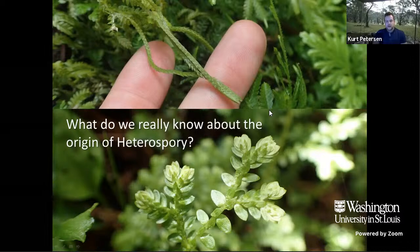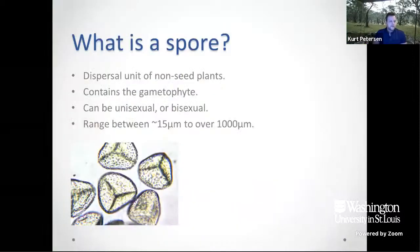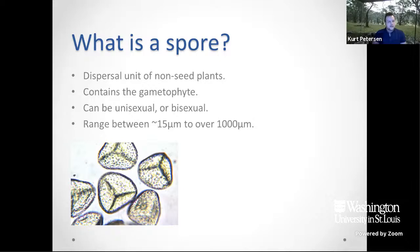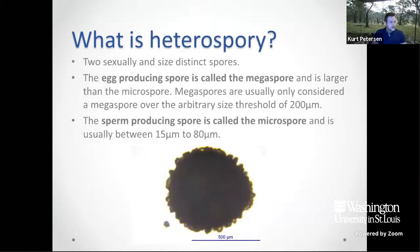I'll start by talking about what a spore actually is, to help anybody who's not too familiar with the non-seed plants. A spore is the dispersal unit of non-seed plants. It contains the gametophyte — the gametophyte is the haploid stage of the adult plant life cycle. In bryophytes that's the dominant adult stage, and in lycophytes and ferns that's much more reduced. A spore can be asexual or bisexual and they can range from 10–15 microns all the way up to a thousand microns or more. That picture there is one I've taken of some microspores of a Huperzia, which is a lycophyte.